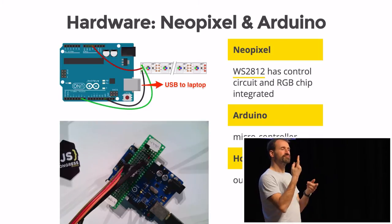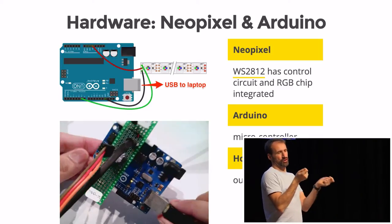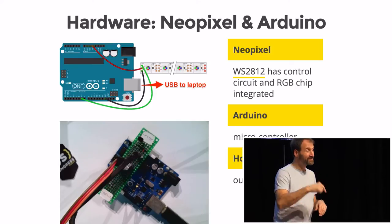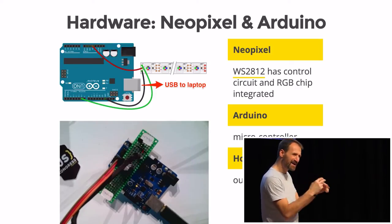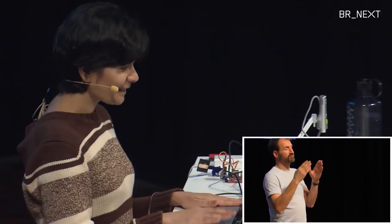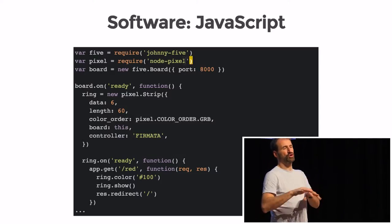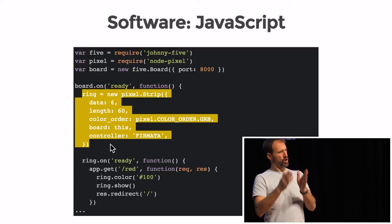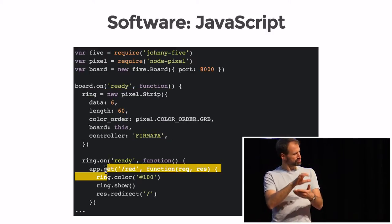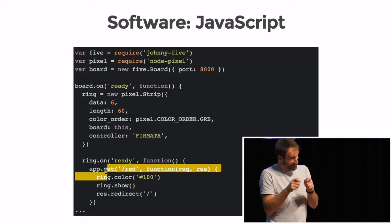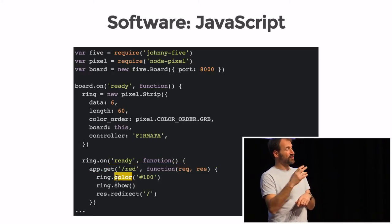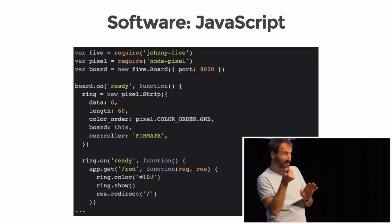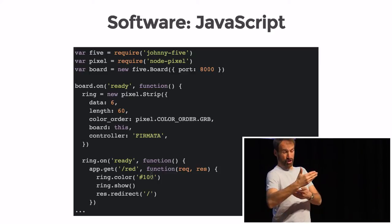Any Firmata-based application has three things to consider: the hardware — which is the NeoPixel and the Arduino board — and the host computer where you run the JavaScript. In the software, I initialize Node, and using Express routing, when I hit the HTTP GET route slash-red, it displays the ring color. So from my laptop I communicate all the way to the Arduino.